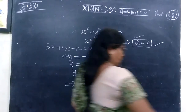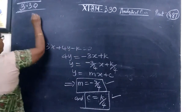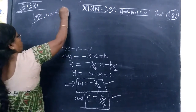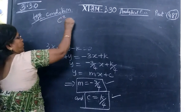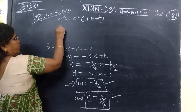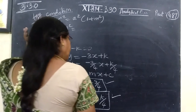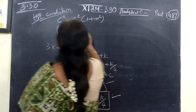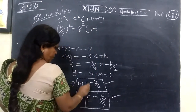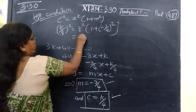The condition for tangency is c squared equal to a squared bracket 1 plus m squared. Substituting: k by 4 whole squared equal to 8 squared into bracket 1 plus minus 3 by 4 whole squared, which gives k squared by 16 equal to 64 into 1 plus 9 by 16.